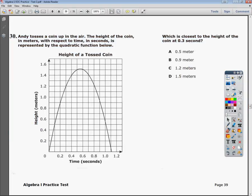This is the Algebra 1 End of Course Practice Test 2, question number 30. The question says, Andy tosses a coin up in the air. The height of the coin in meters with respect to time in seconds is represented by the quadratic function below.